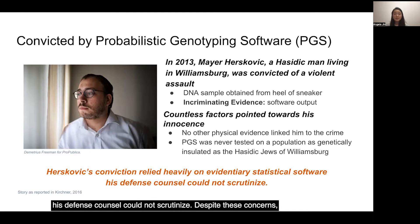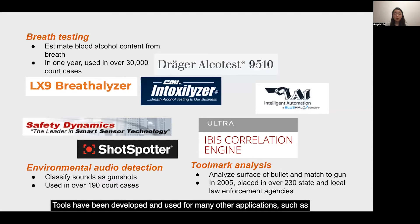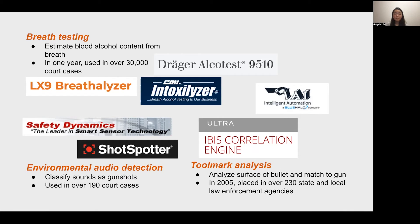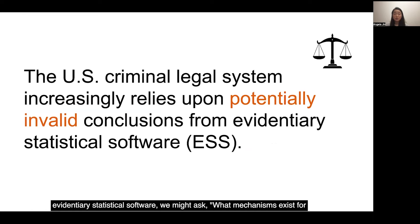Despite these concerns, PGS tools have been used in a total of over 220,000 court cases worldwide, and evidentiary statistical software are not just used for probabilistic genotyping. Tools have been developed and used for many other applications, such as breath testing, environmental audio detection, and tool mark analysis. Given that the U.S. criminal legal system increasingly relies upon potentially invalid conclusions from evidentiary statistical software, we might ask: what mechanisms exist for validating these tools?